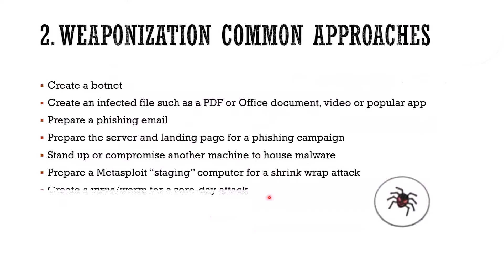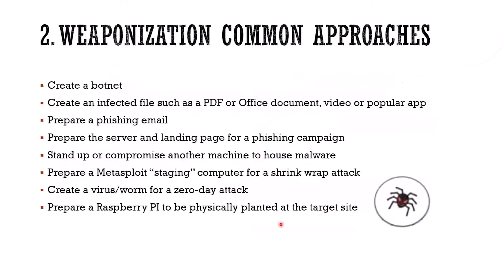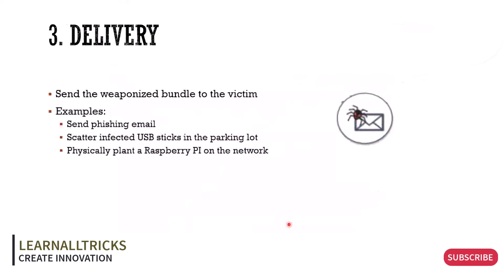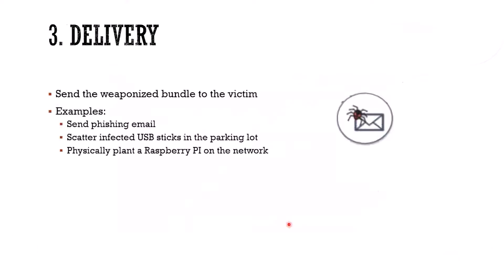Other weaponization options include: create a virus or worm, create our own zero-day attack, set up a Raspberry Pi and physically plant it in their lobby, or prepare malicious USB sticks. We're preparing the weapons — we haven't deployed them yet, but we're getting them ready. That's weaponization. For delivery, we send the weapon to the victim: we could send a phishing email, scatter USB sticks in the parking lot, or physically plant that Raspberry Pi on their network.